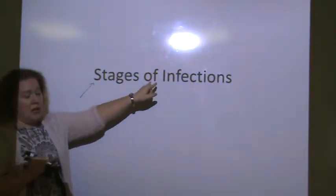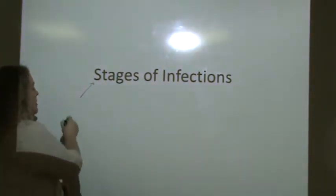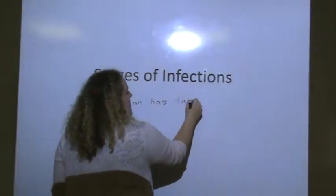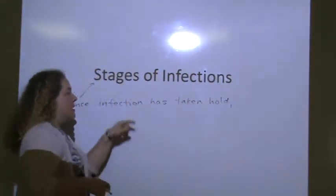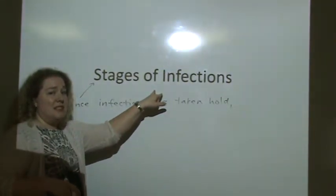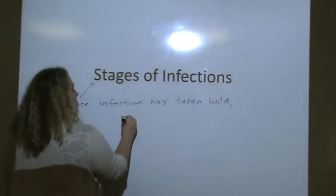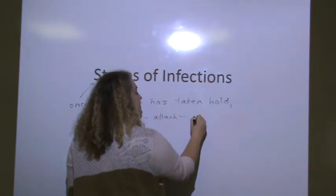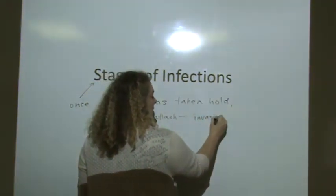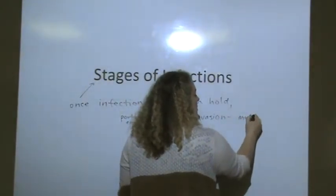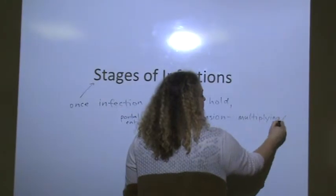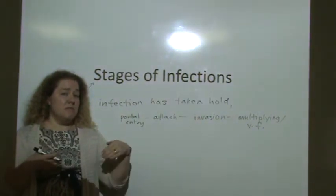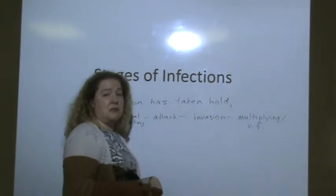This particular mini lecture is about once an infection has taken hold, how does that infection then proceed for the person? So this is assuming that we have gone through portal of entry, we have gone through attachment, we have gone through invasion, and we have gone through multiplying and starting to use those virulence factors. We've come to that point and from this point the person who is being infected is going to show signs and symptoms of infection.